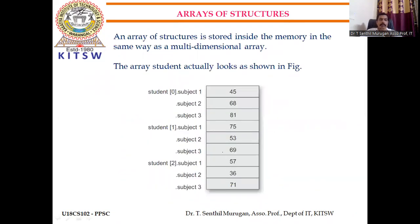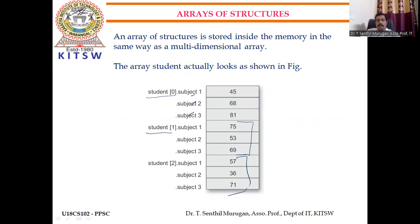When an array of structure is used, continuous memory is allocated. The data is stored as: student[0] dot subject1, subject2, subject3 in order, then student[1] with all three marks, then student[2] with all three marks. So for each student, all members are stored consecutively in memory.